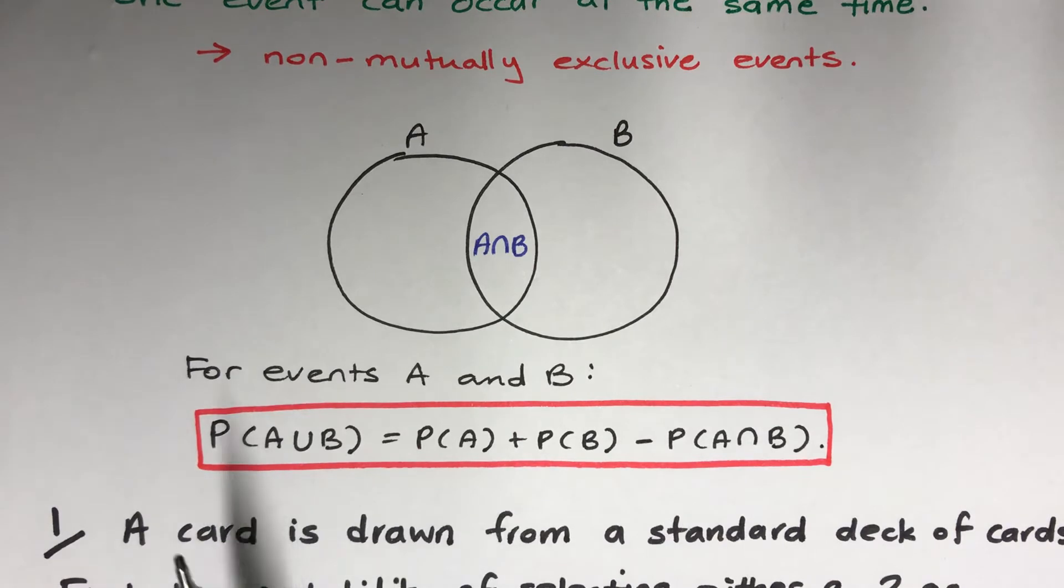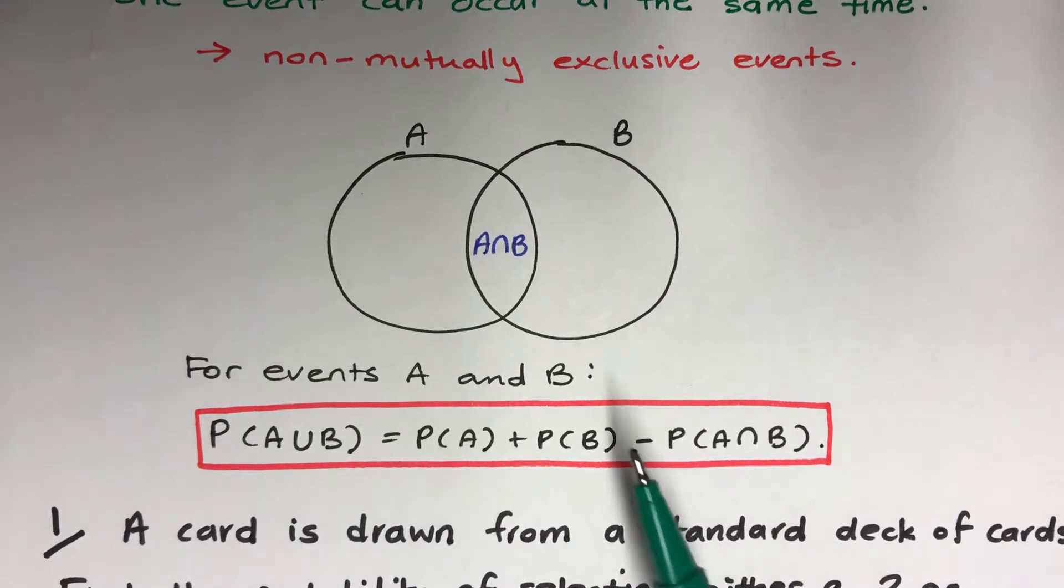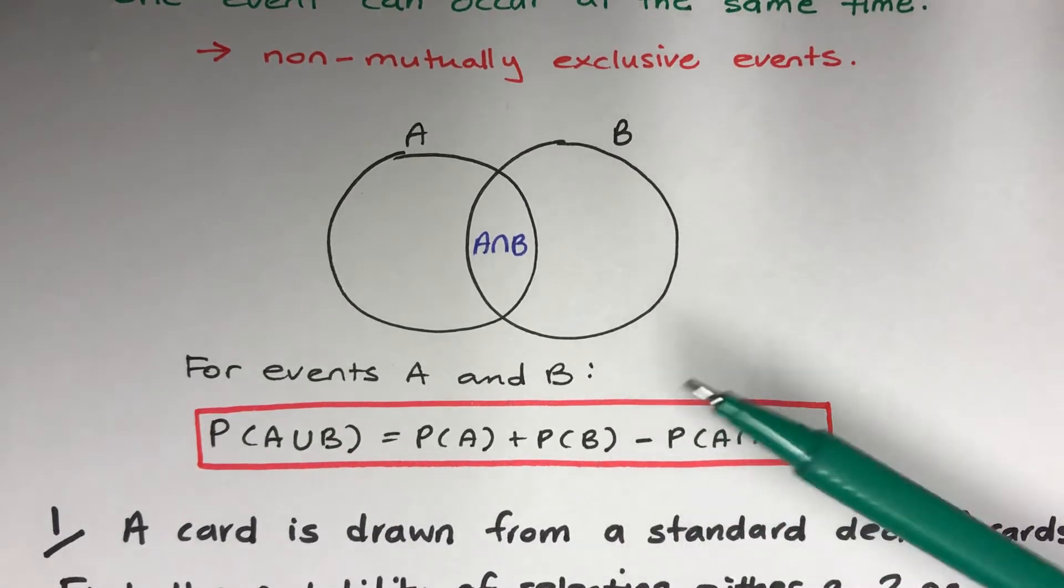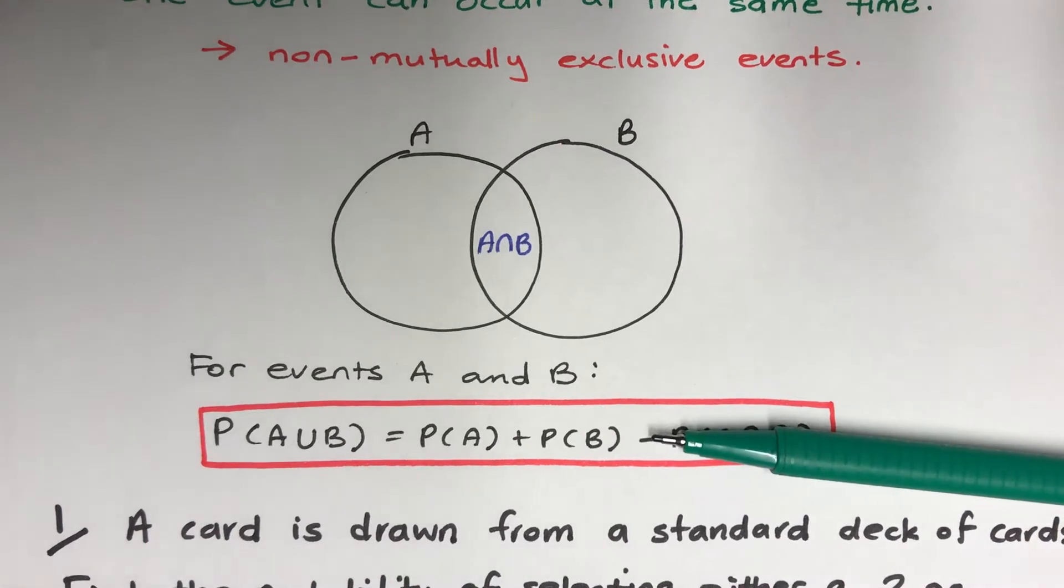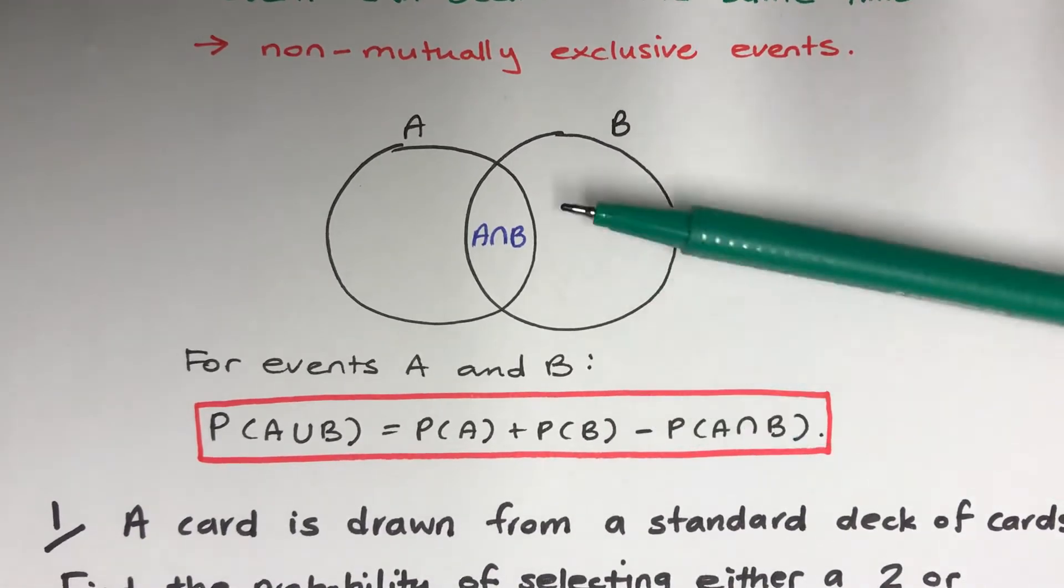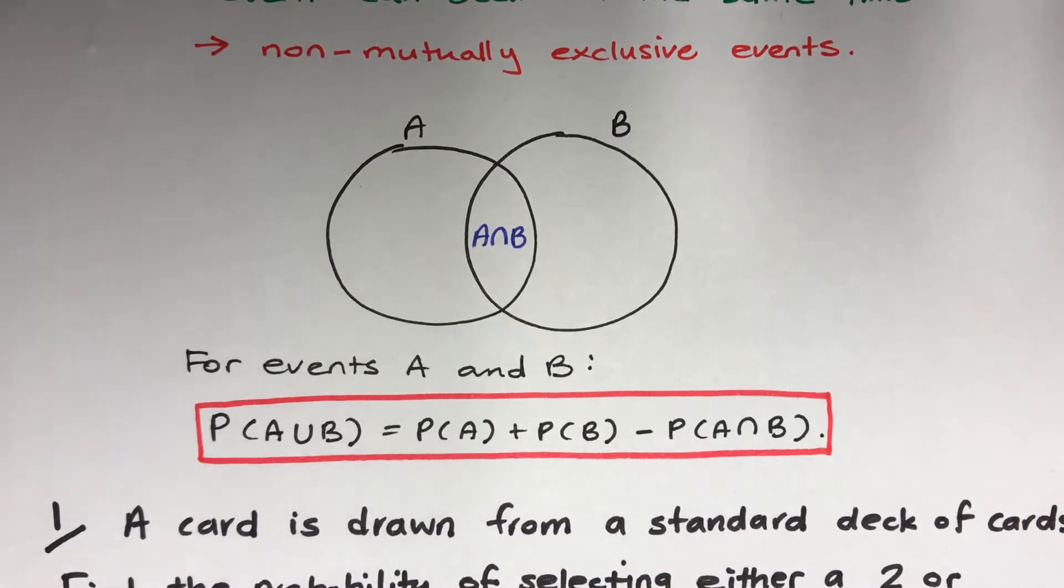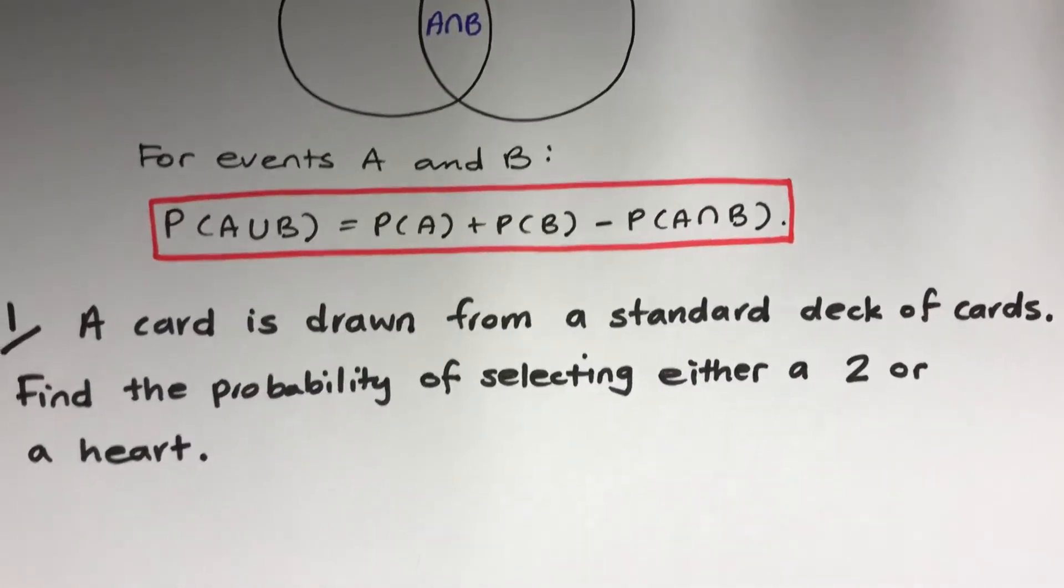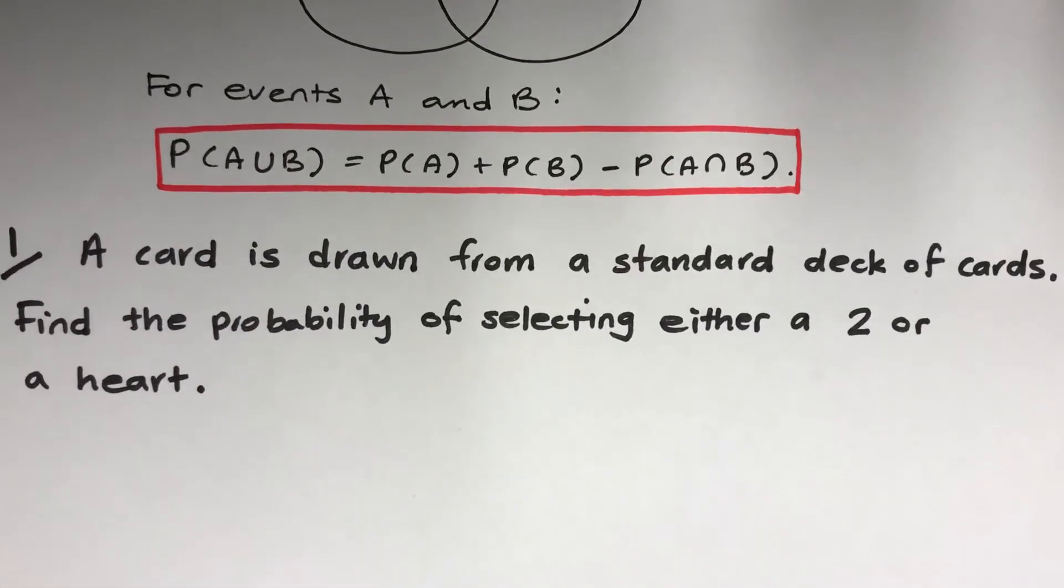If we want to find the probability of A union B, with mutually exclusive events we didn't have to worry about the overlap, but this time there is overlap so we need to take that overlapping part away. Let's have a look at the question.